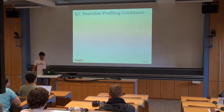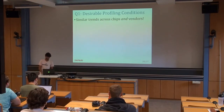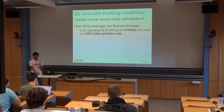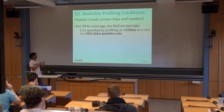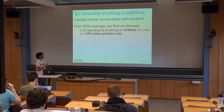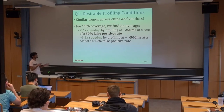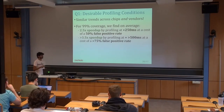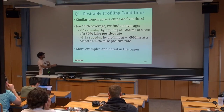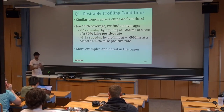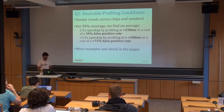We use these three metrics to explore all sorts of different profiling conditions for different temperatures and different refresh intervals. Regarding the first question — what are the desirable profiling conditions — we find very similar trends across different chips and vendors. For an example point, to maintain 99% coverage of failing cells at given conditions, profiling at plus 250 milliseconds relative to what we want to operate at yields a 2.5x speedup on average at a cost of a 50% false positive rate. We can push the speedup much higher by increasing the reach conditions, but at the cost of an increasing false positive rate. We have a very exhaustive analysis of this in the paper.